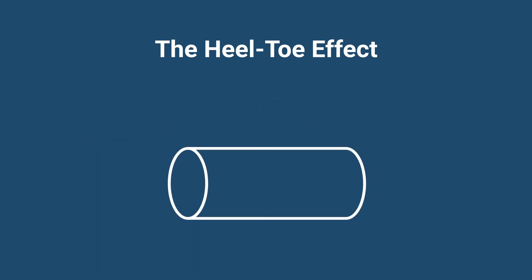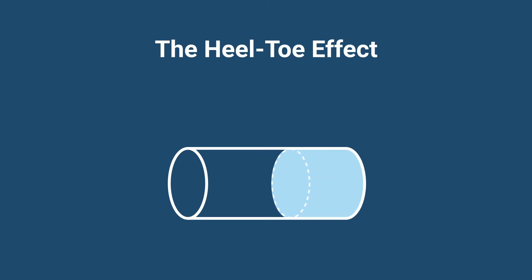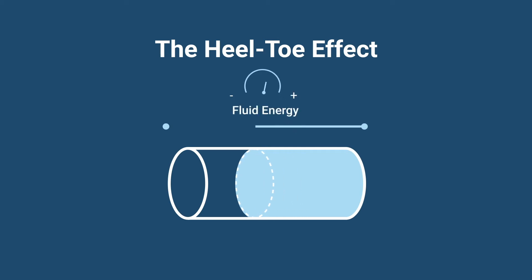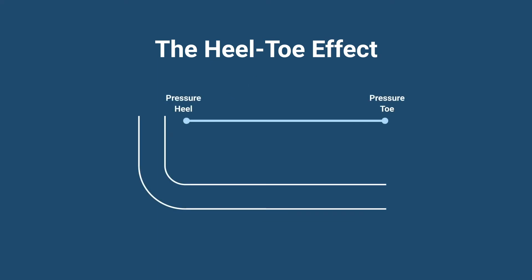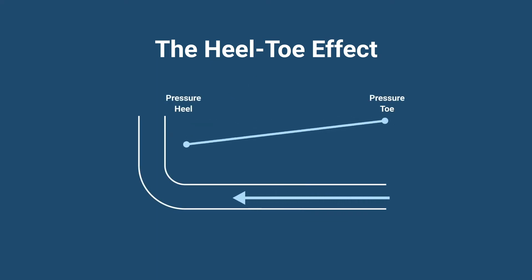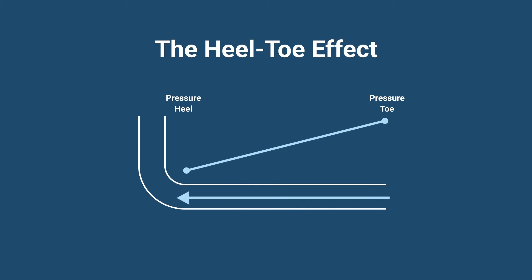The pressure drop is caused by the friction created between the fluid and the pipe walls, otherwise known as friction loss, which implies that the fluid loses energy along the way due to frictional forces. That's how the pressure gradually decreases inside the well pipe as the fluid flows from the toe to the heel.